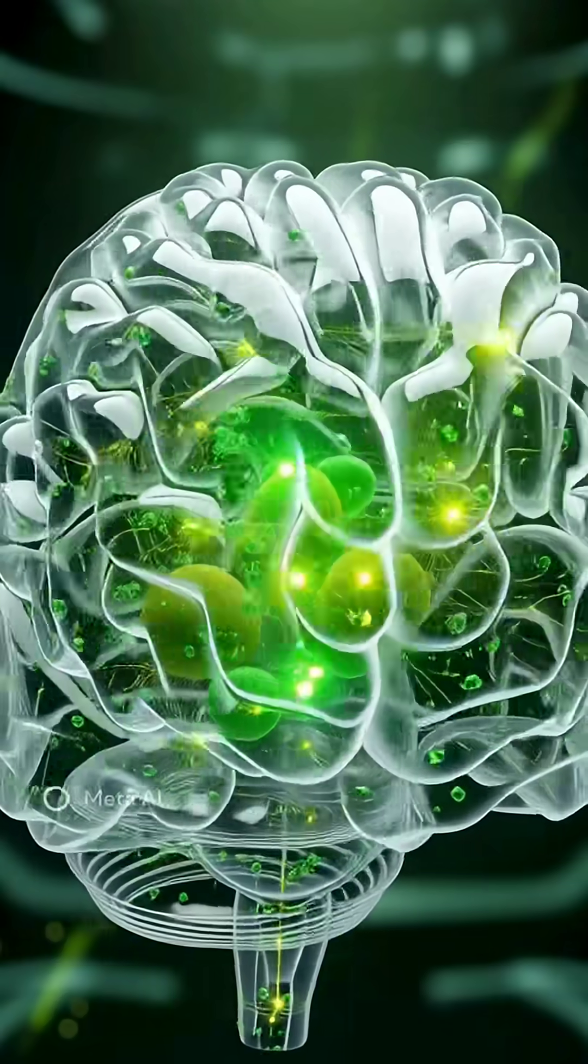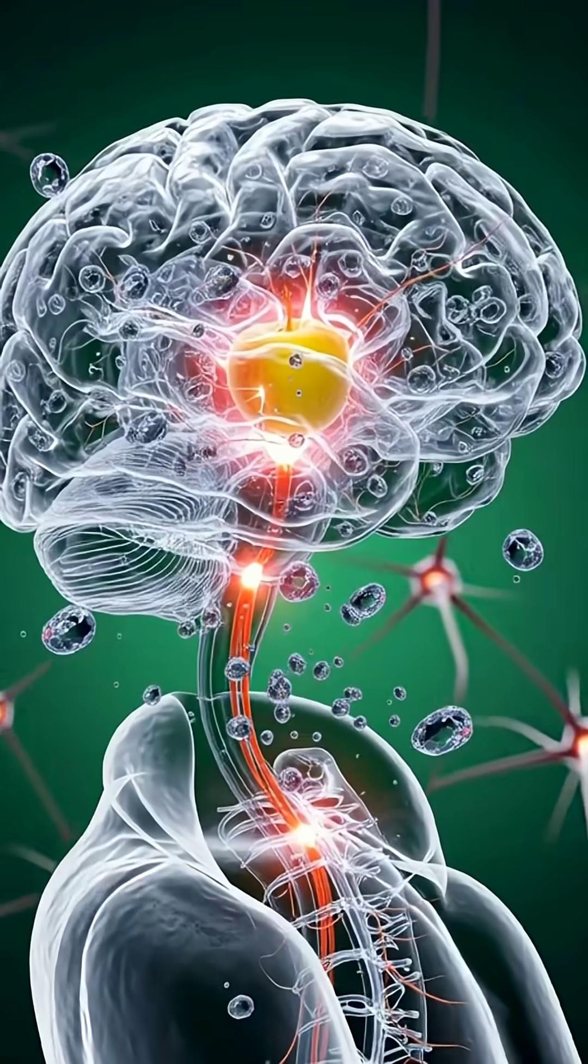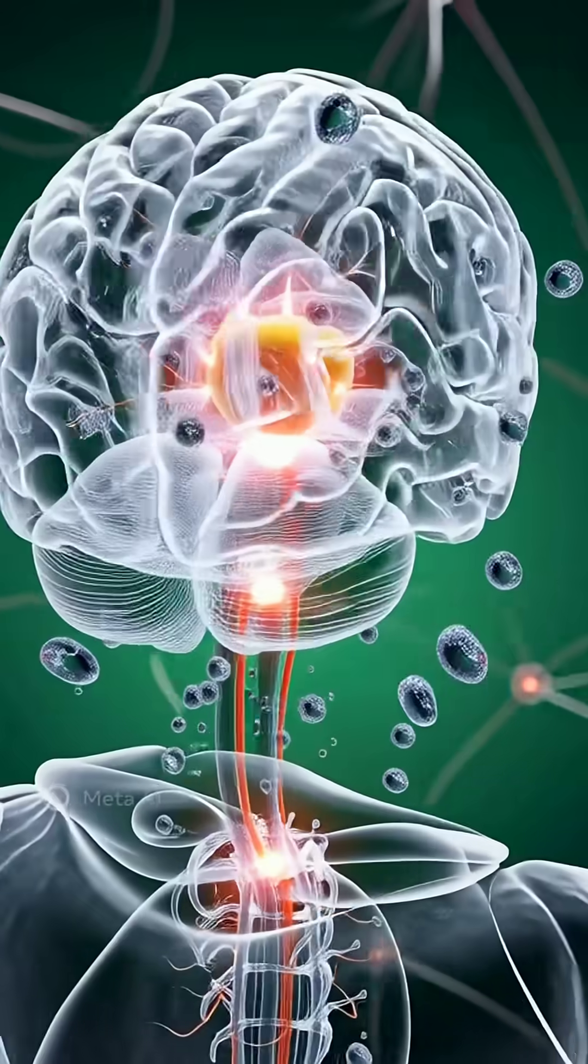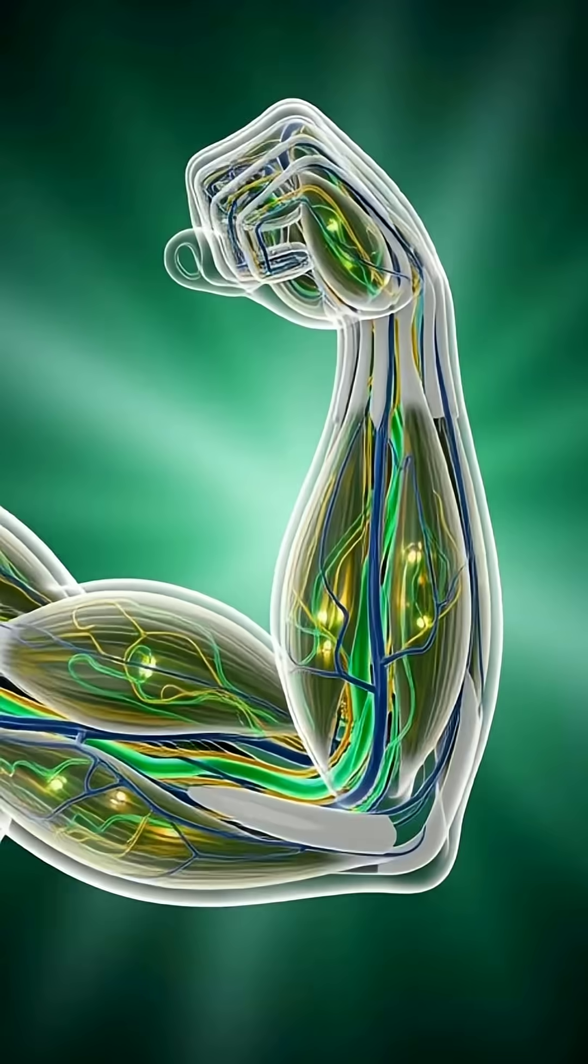Inside the transparent brain, neurons begin to spark. Signals move faster. Focus sharpens. Clarity rises. The apple feeds the mind as much as the body.